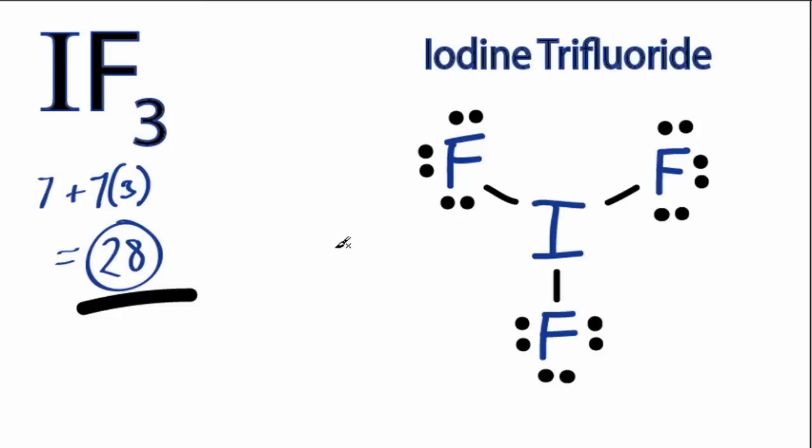The fluorines all have octets, but the iodine doesn't have an octet. We also know that iodine is in period 5, so it can even hold more than 8 valence electrons. Let's put our 4 valence electrons. Let's put 2 right here and 2 right here, and we've used all of our valence electrons.